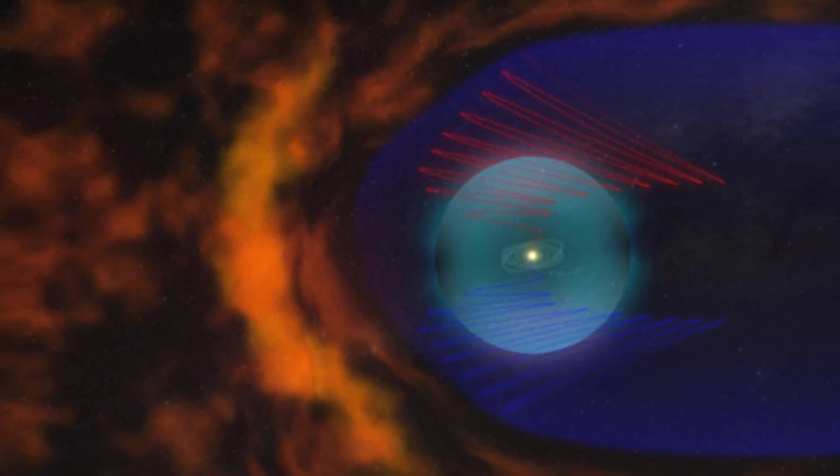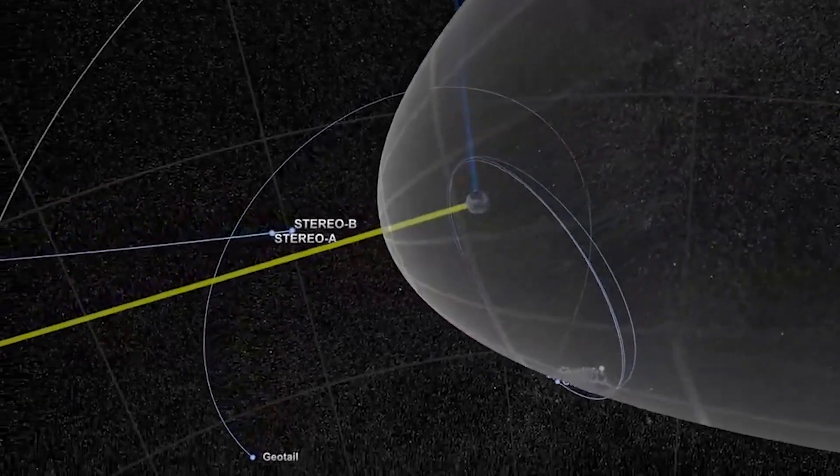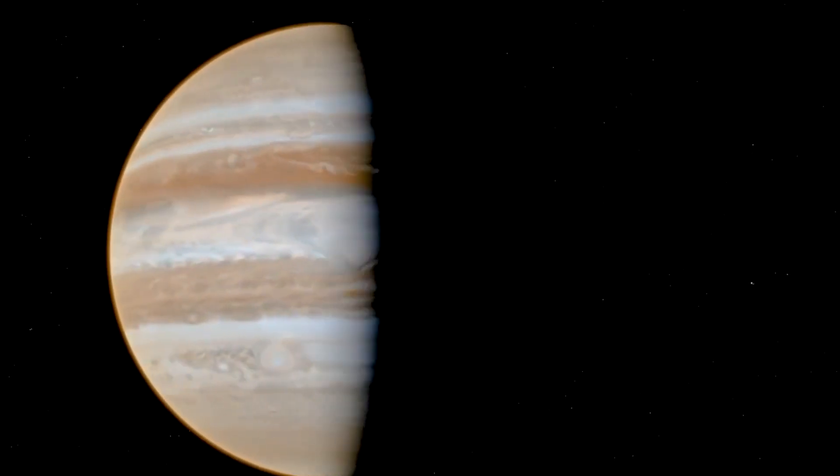Challenges to theoretical models arose, as the Heliosphere's behavior, anticipated to align with the Sun's 11-year cycle, did not correlate with Voyager data.